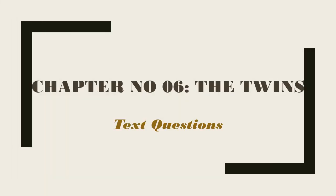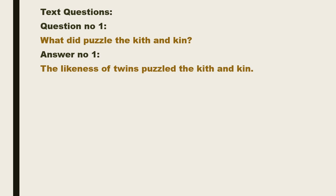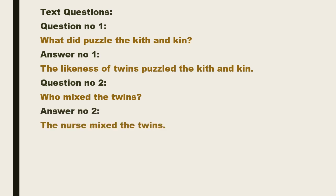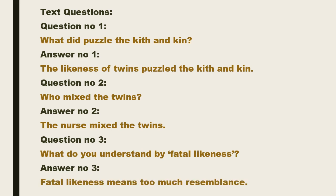Now we shall do text questions of chapter number 6, The Twins. Question number one: What puzzled the kith and kin? The answer: The likeness of the twins puzzled the kith and kin. The second question: Who mixed up the twins? The answer: The nurse mixed up the twins. The third question: What do you understand by fatal likeness? The answer: Fatal likeness means too much resemblance.